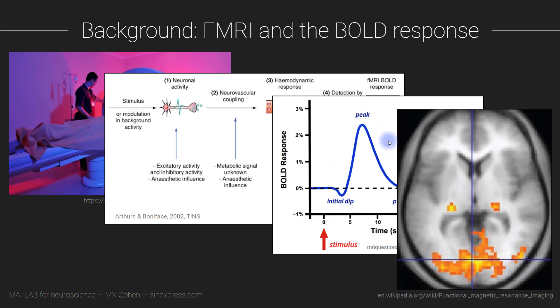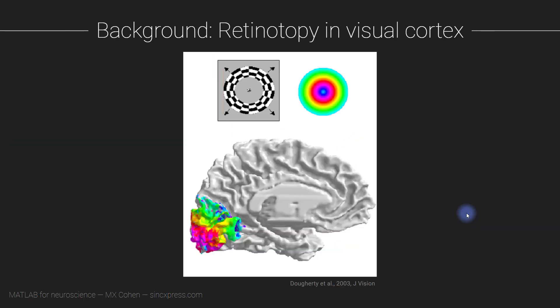Then by quantifying this response for each voxel we can generate an anatomical functional map that would look something like this. Now I'm going to tell you briefly about retinotopy and visual eccentricity and how those are processed in the brain. Retinotopy means that there is a direct relationship between the physical location on your retina when you're looking at something and the physical location in the visual cortex where information from the retina is processed.